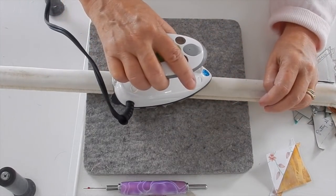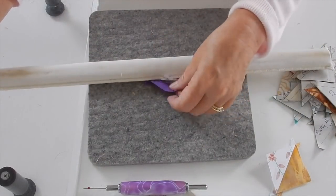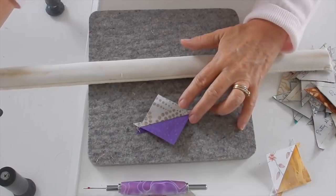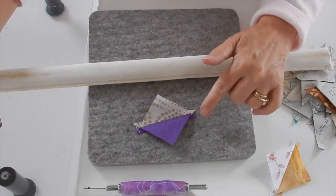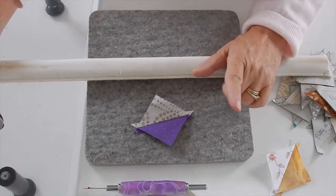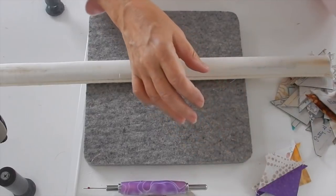I'll set that down and now I'm going to press my seam open. So here we go. Now I'm pressing my seams open for a particular reason. The quilts that we're going to be making out of this I want the least amount of bulk as possible on these corners. Which is why I'm pressing them open.